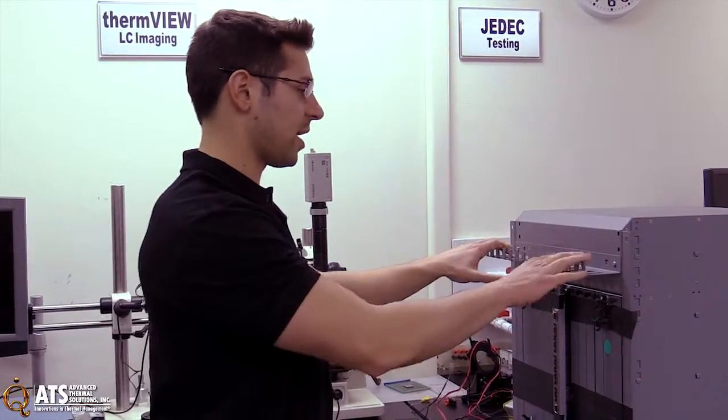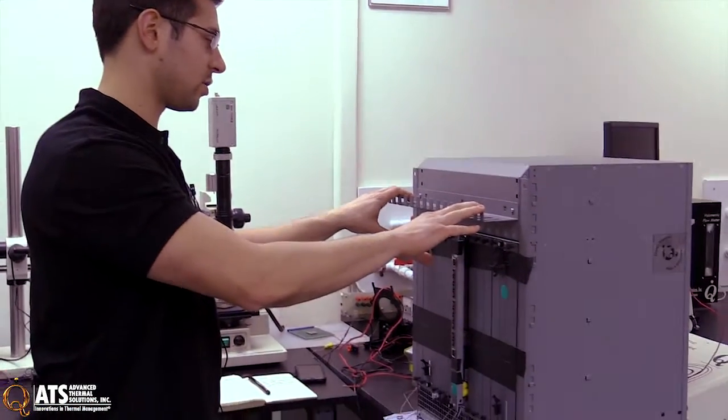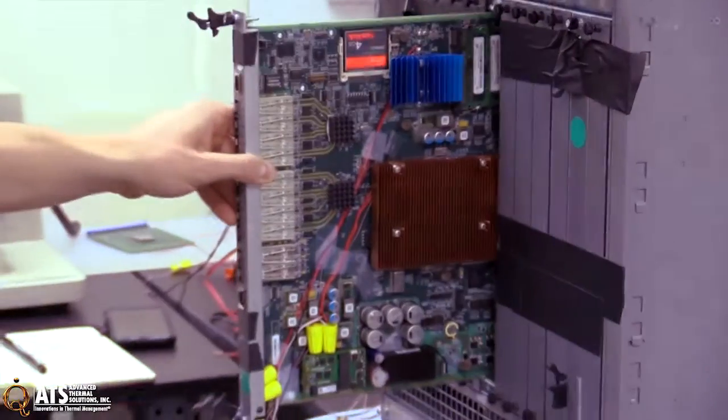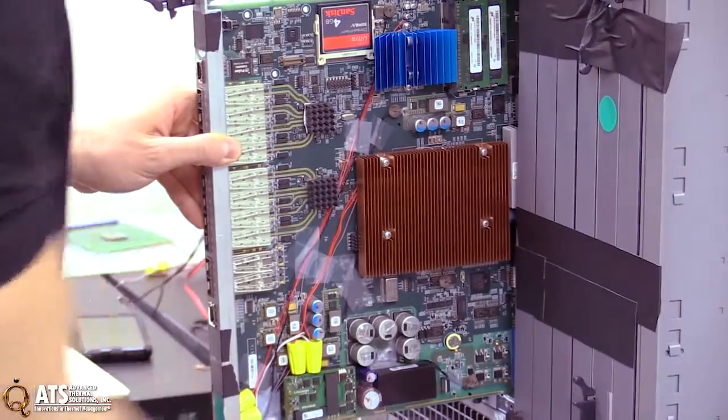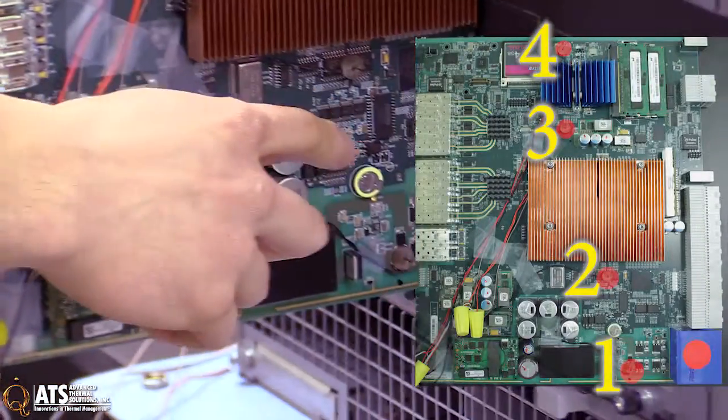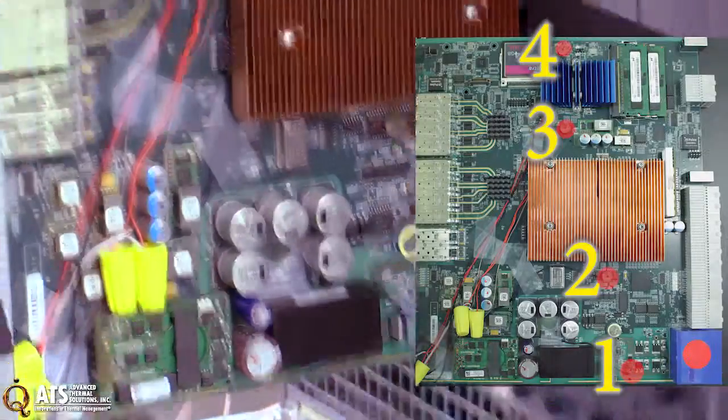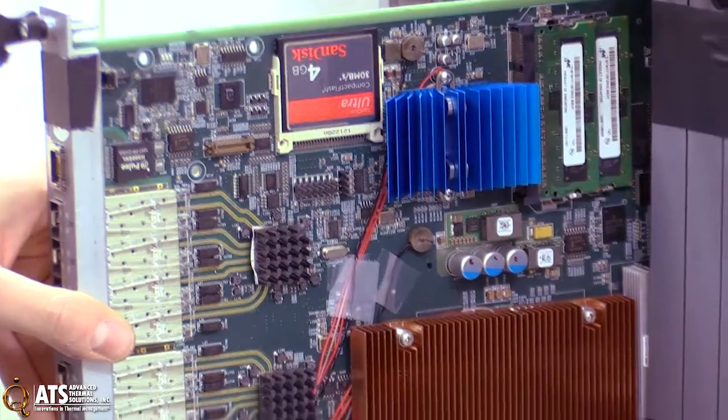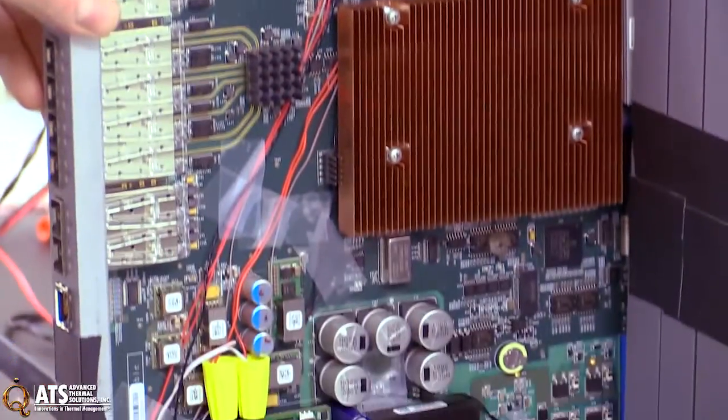So as you can see, this is a standard 14-slot ATCA chassis. We pull the card in question out and we have the candlestick sensors put in distinct locations everywhere across the board with regards to locations that we want to characterize and measure air flow.